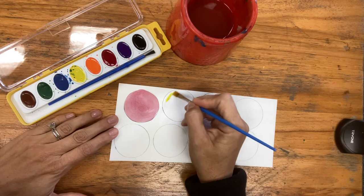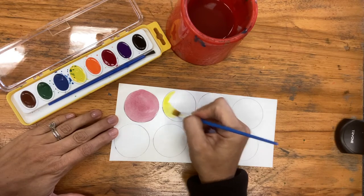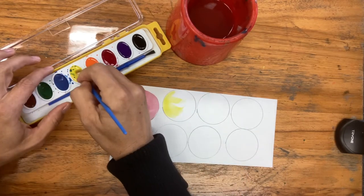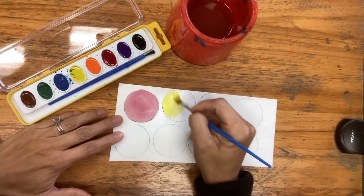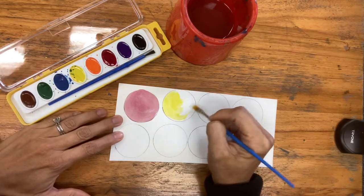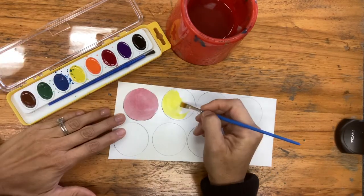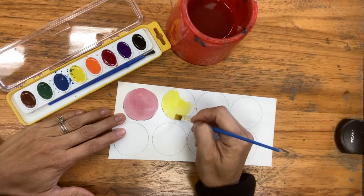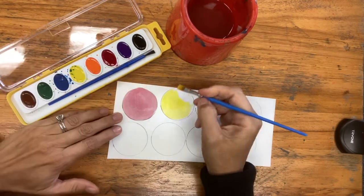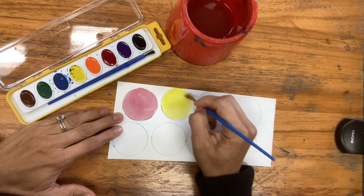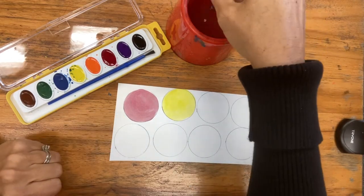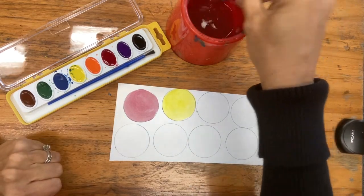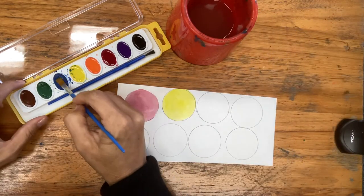Now I'm going to gently put my yellow on there. And then I'll rinse my brush again and I'll do my blue gumball.